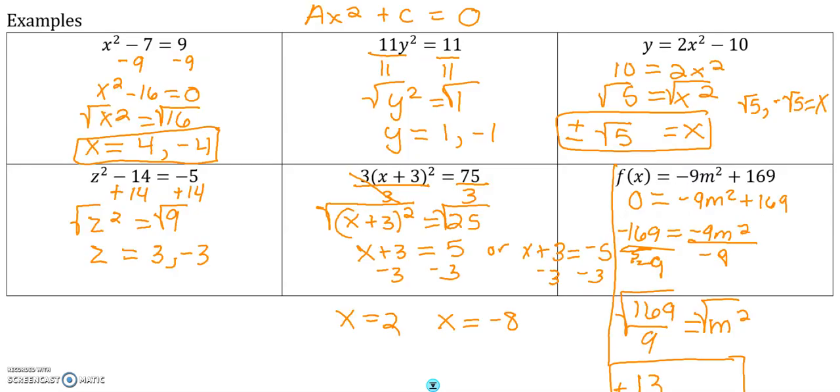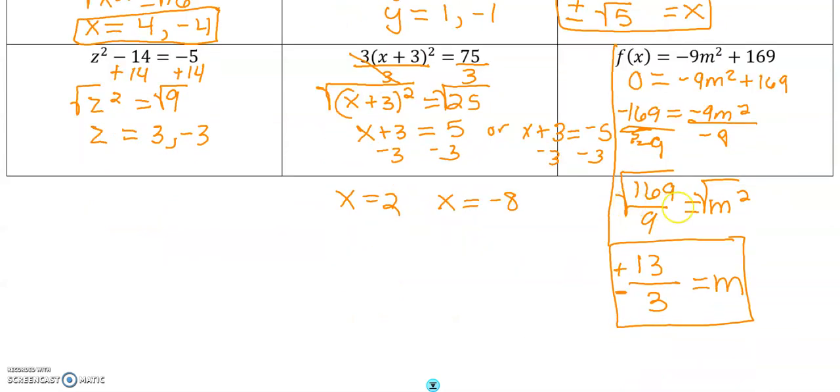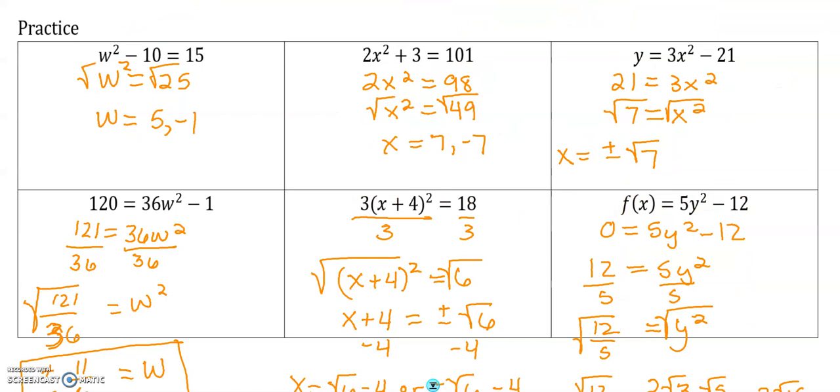Before we go on to check our answers, I want to go back to the last example problem that we did together. We had to take the square root of 169 over 9, which we can break up into two radicals, and we should still be getting two answers here, plus or minus 13 over 3. I neglected to mention that before. Take a look at your work here.